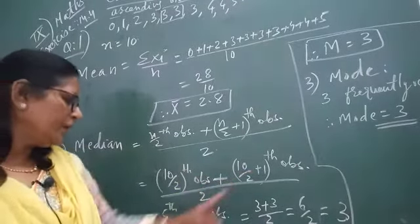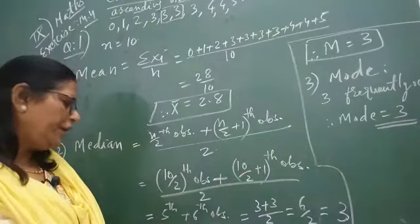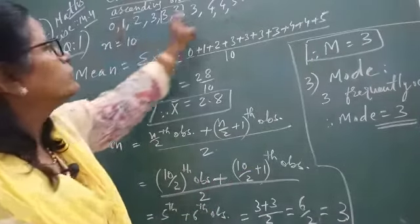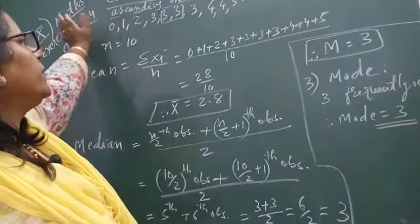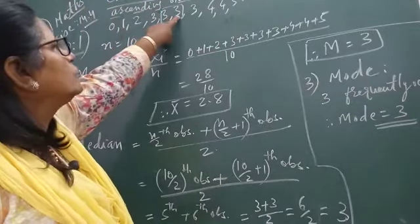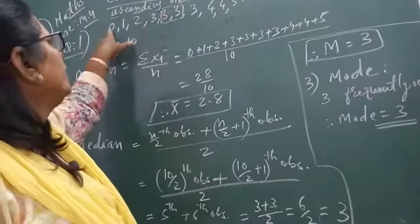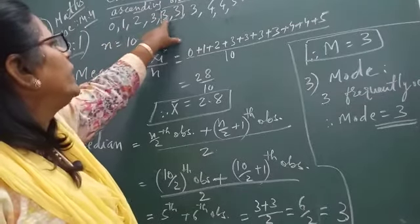10 upon 2, 5 plus 1, 6th observation divided by 2. Now in this observation already we arrange in ascending order. 5th and 6th observation, that is 1, 2, 3, 4, 5, and 6.